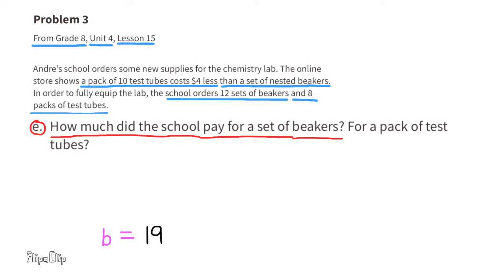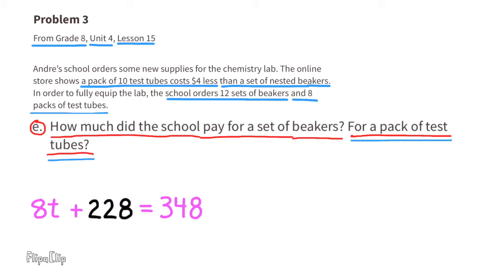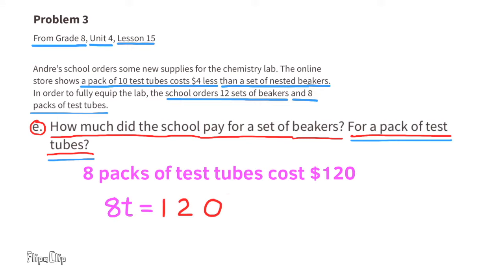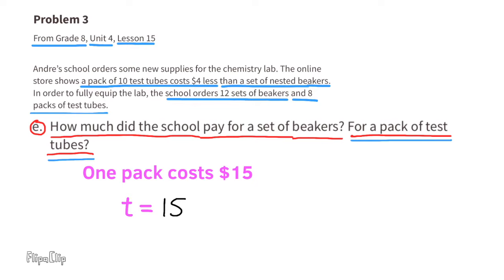How much did the school pay for a set of beakers, and how much did they pay for a pack of test tubes? One set of beakers costs $19. Using the equation 8t + 12b = 348, substitute b with 19: 12 times 19 is 228, so they spent $228 on beakers. Subtract 228 from both sides: 8 packs of test tubes cost $120. Divide both sides by 8: one pack of test tubes costs $15.